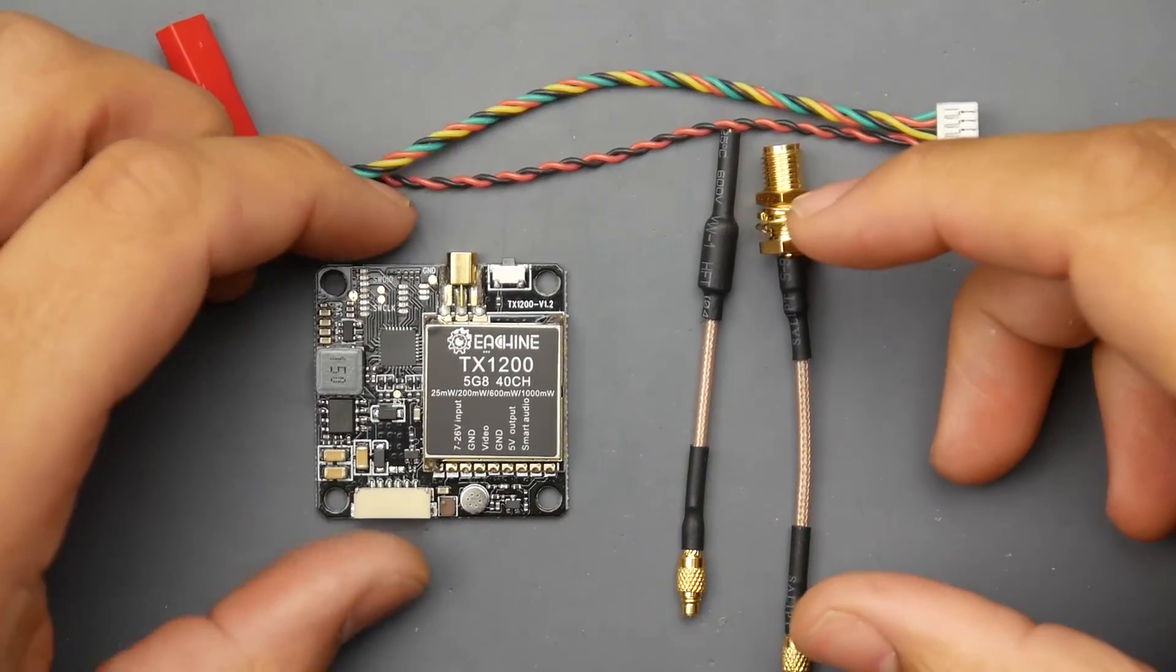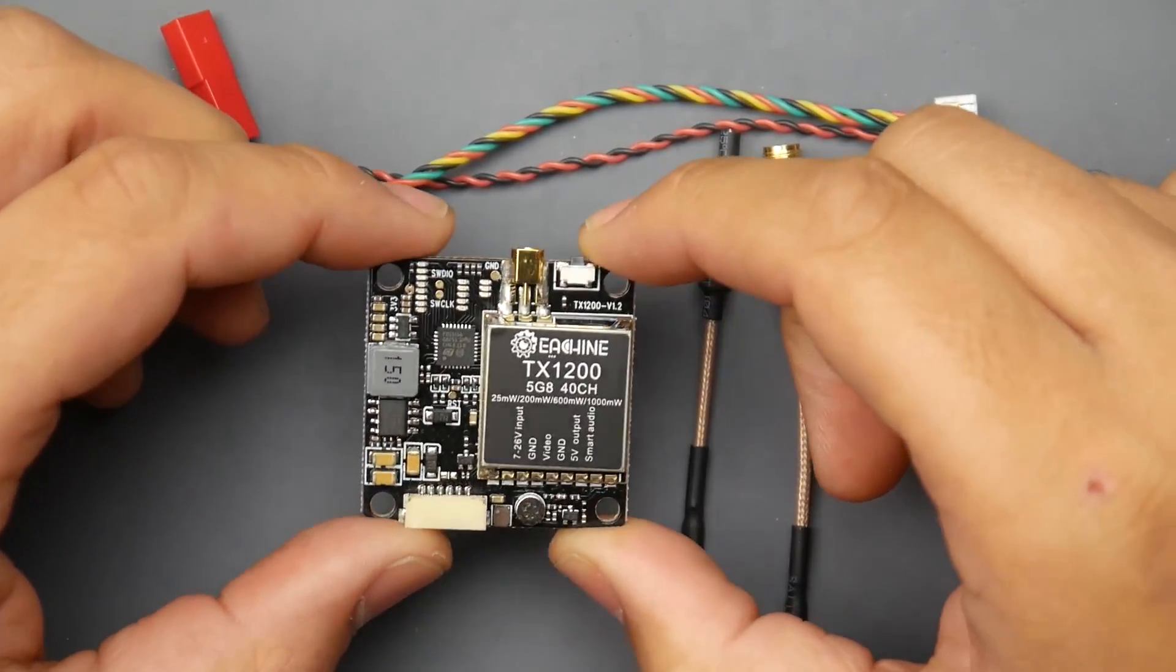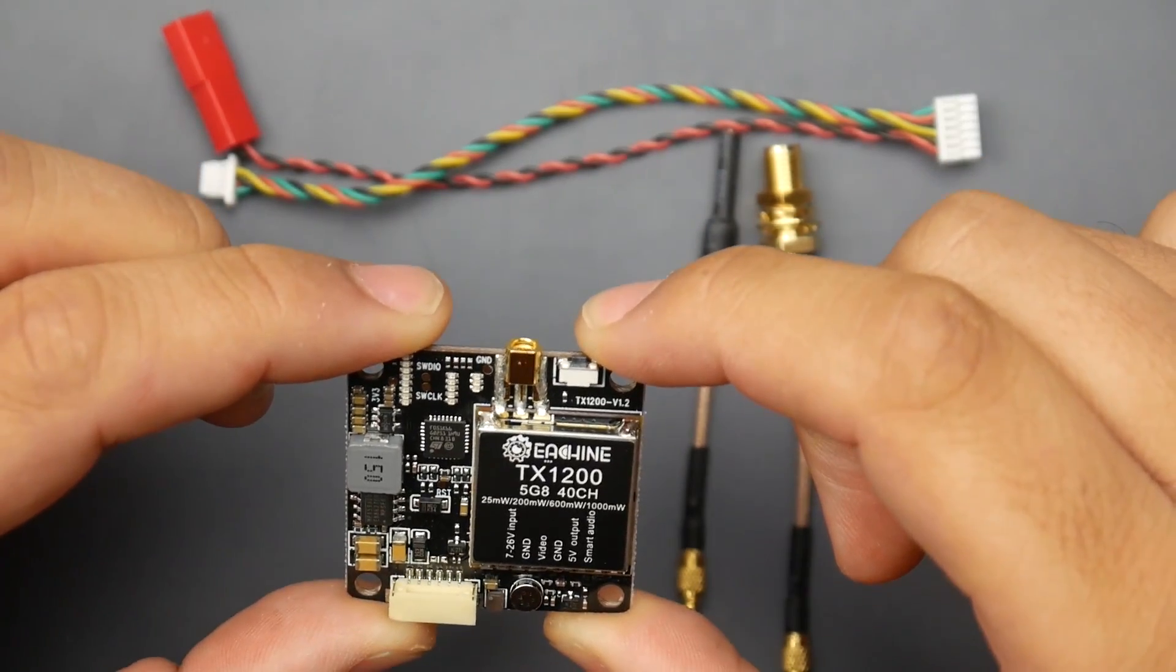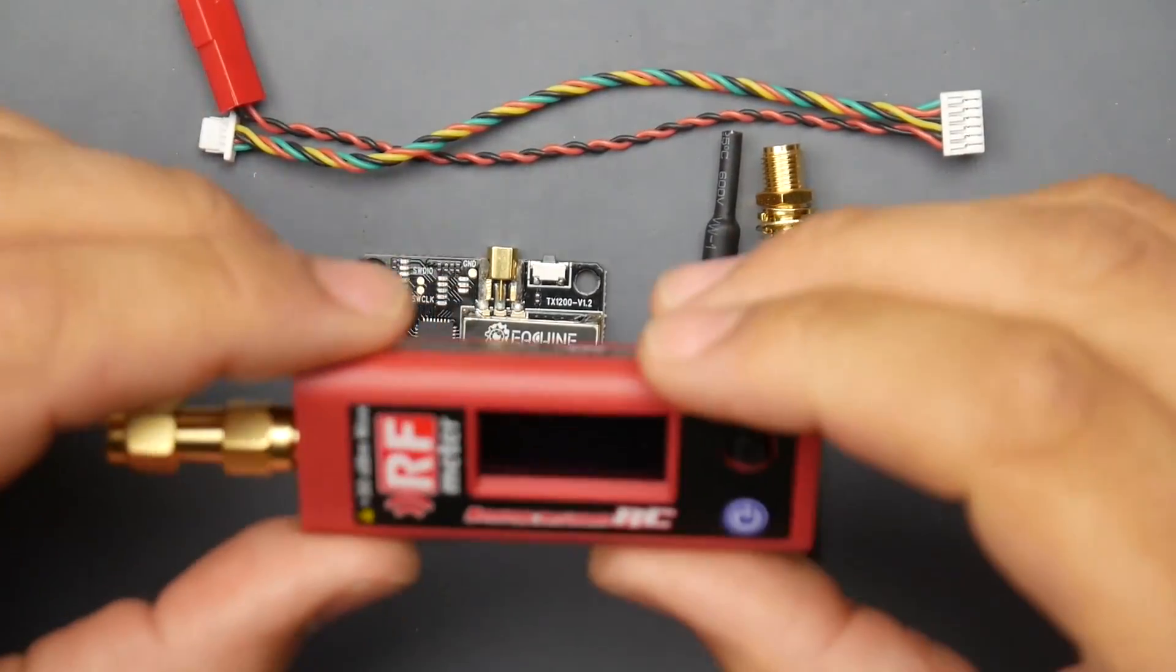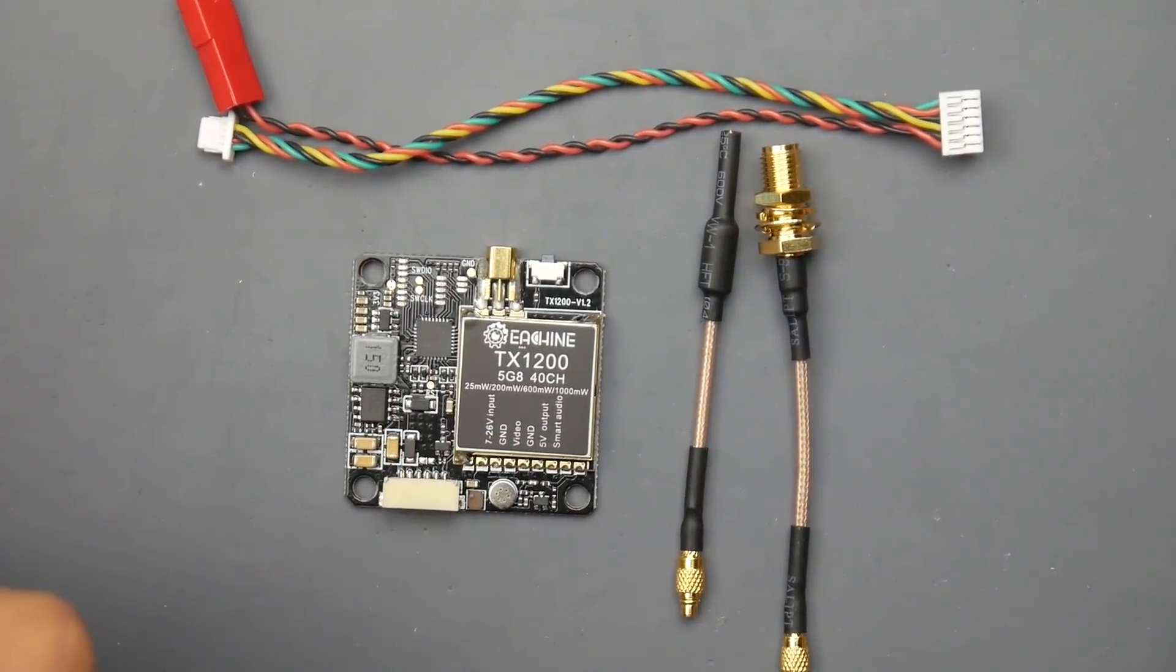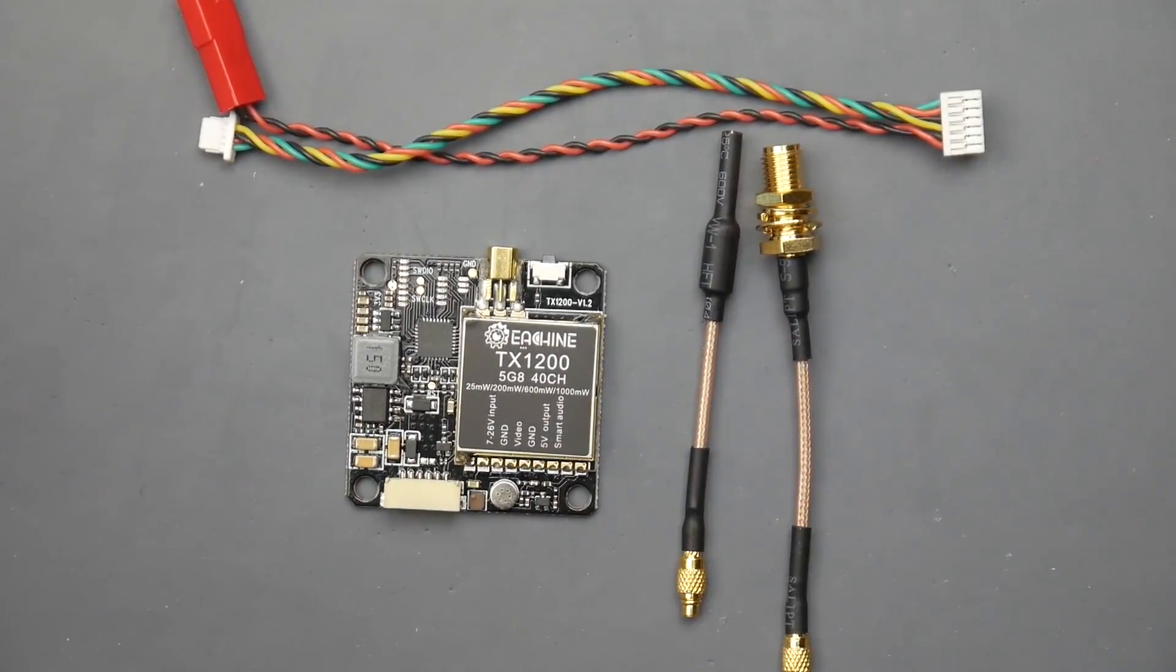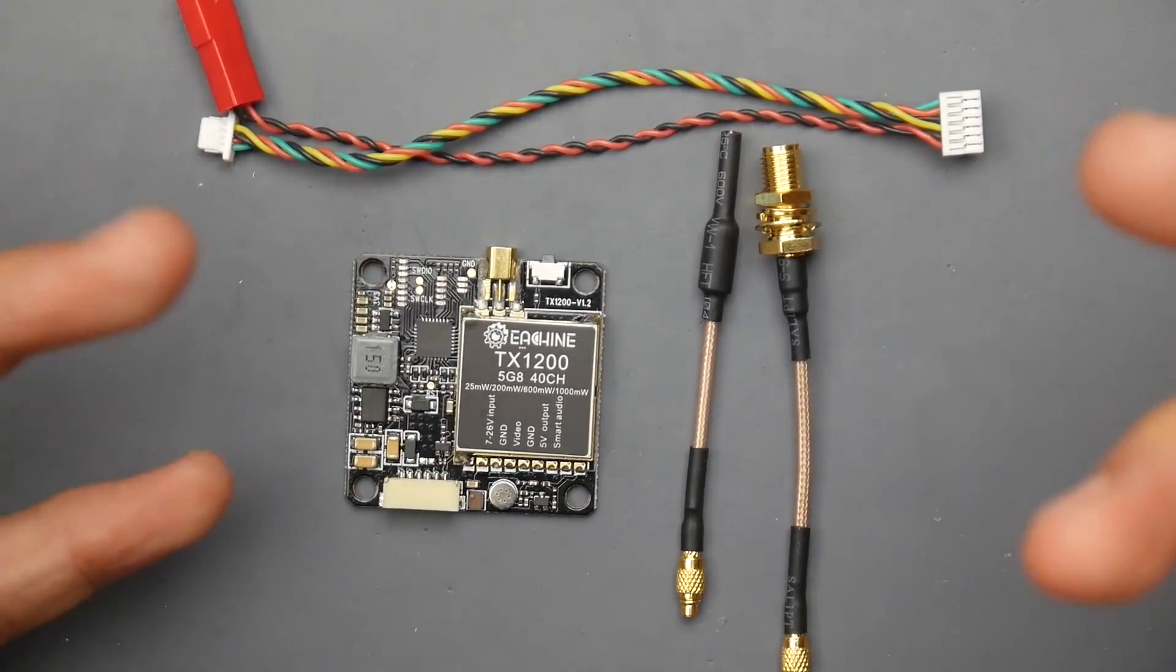Hey, what is up guys and welcome back. Today we're going to be testing the Eachine TX1200. This is stating that it can go up to 1000 milliwatts, which is also one watt, and we're going to test that out today. I do have the RF meter from Immersion RC and I have a spectrum analyzer that should be here next month sometime, but meanwhile we can get a clear idea if it's actually performing as they're stating or not.